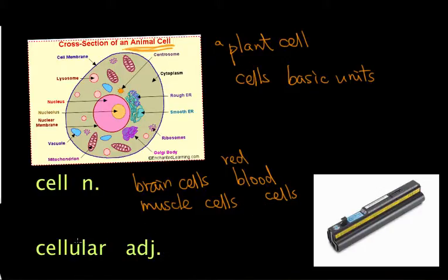The adjective is cellular. Please repeat after me, cellular. When you use the word cellular, you are talking about cells. For example, you can say cellular structure.